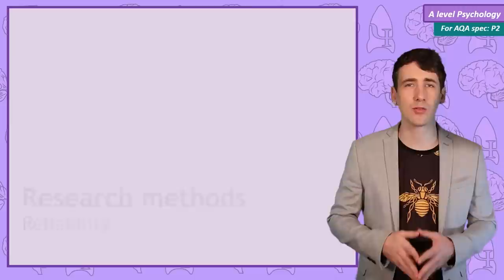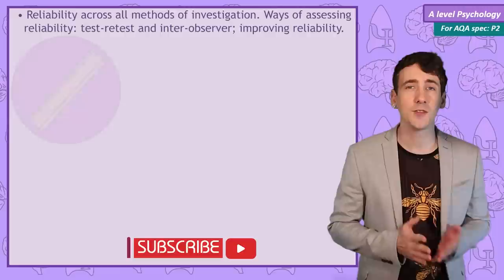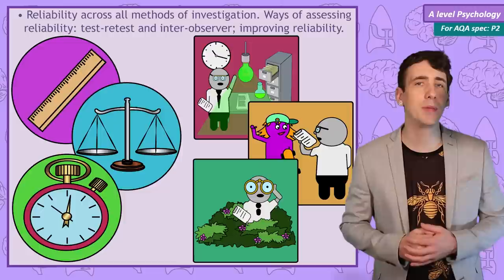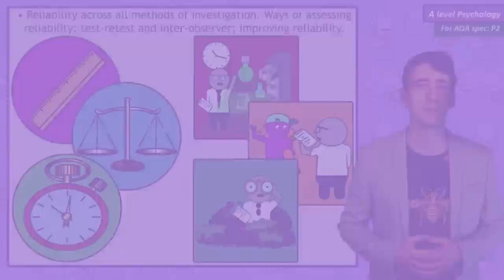In psychology, like the other sciences, we are interested in measuring things. While in physics it is important to have rulers, scales and stopwatches that always give consistent measurements, in psychology our methods of measuring behaviour have to give consistent results whenever they are used. So in this video we are going to cover reliability in psychological investigations, how to check for or assess reliability, and how to improve reliability.